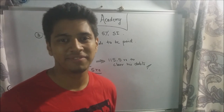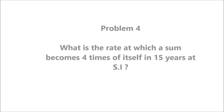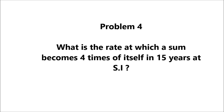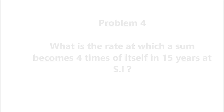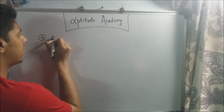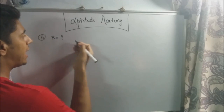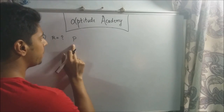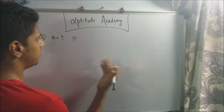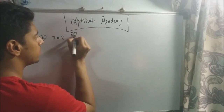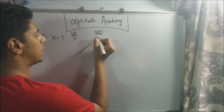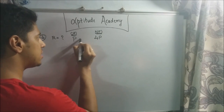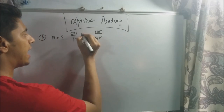Problem 4: What is the rate at which a sum becomes four times itself in 15 years at simple interest? For this sum they ask: at what rate r will a principal p become four times itself? So old money is p and new money is 4p, to be reached in 15 years.